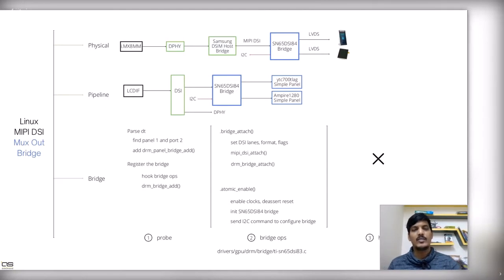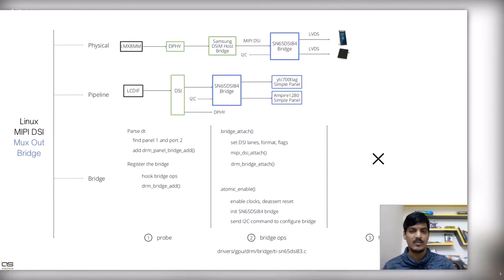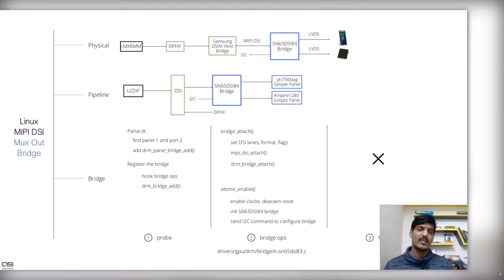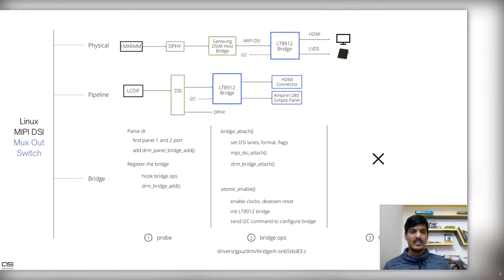The next one is the multi-output bridge, similar to what we have discussed so far. Here we need to probe two different panels and switch the panels, outputting to those panels via their communication. The probe identifies the panels, creates panel bridge instances, and tries to hook the bridge ops and host ops. Once the pipeline is attached, the host takes the I2C transfers from the slaves and pumps the video signal to the respective panels. This is how the two different LVDS outputs have been taken care of.